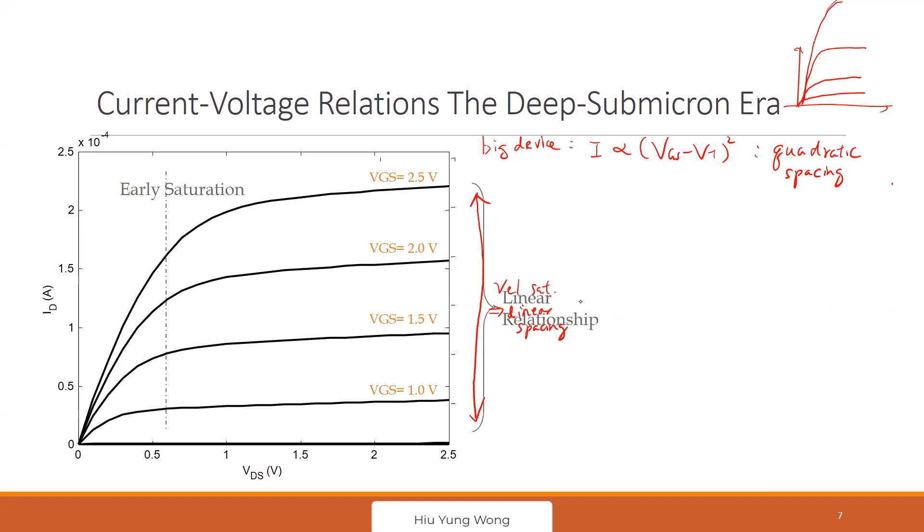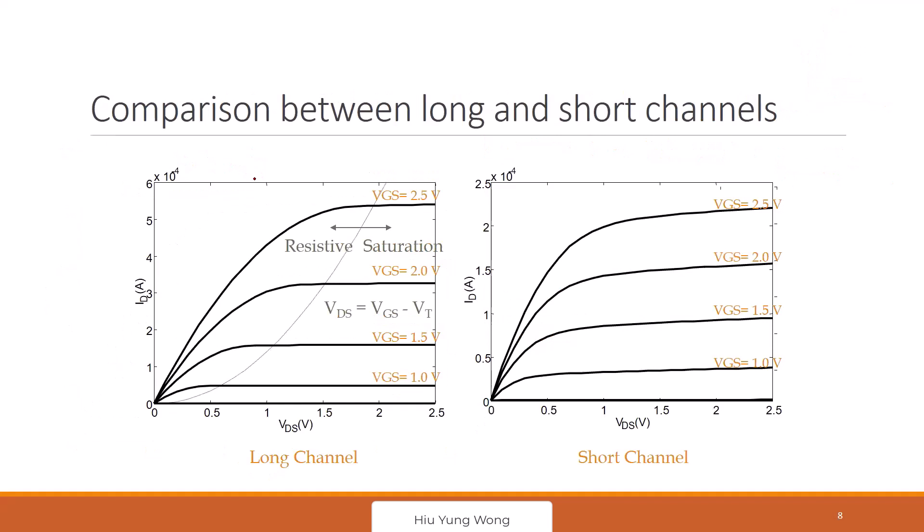And also we get some earlier saturation. In the past, the saturation would be later at larger VDS. But now, even at smaller VDS, it saturates at smaller VDS. And this is what I want to try to show you. So we have two curves. One is long channel, one is short channel.